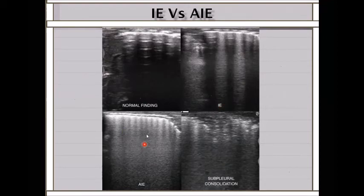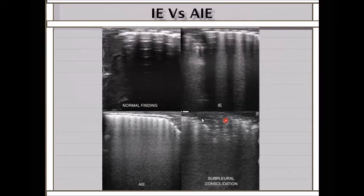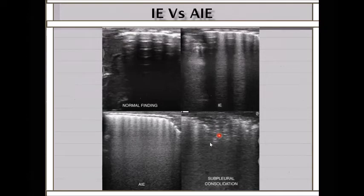This is normal lung: A lines present, B lines do not reach the end. This is abnormal: fewer A lines, B lines reach to the end—interstitial edema. Here both interstitium and alveoli are filled with fluid—the air and interstitium are edematous or collapsed. Air bronchogram seen: loculated, somewhat oblique, not identical like A lines. This is consolidation. If the baby has fever and high white cell count, this is pneumonia. Sub-pleural consolidation is also visible.